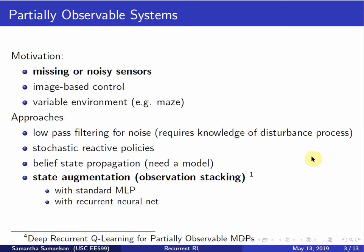There are a couple of ways to deal with this. Obviously, if we're dealing with noisy sensors, we can do a filtering approach or belief state propagation, which is similar to common filtering. But another way to deal with this is with simple state augmentation — that is, if we're missing velocity information, we can augment our current state to include not only the most immediate information from our sensors, but the information that we've gotten in the last 5, 10, 15 time steps, which will implicitly contain that velocity information.